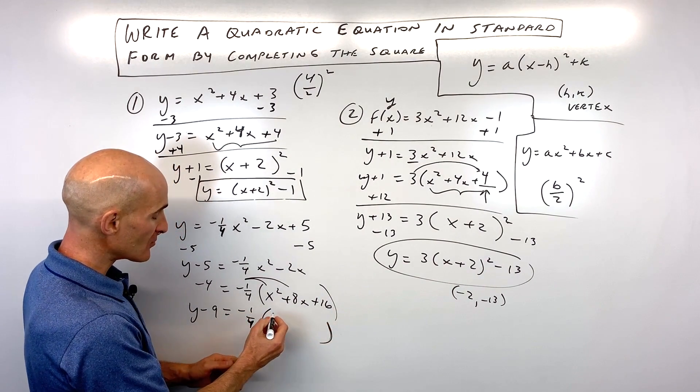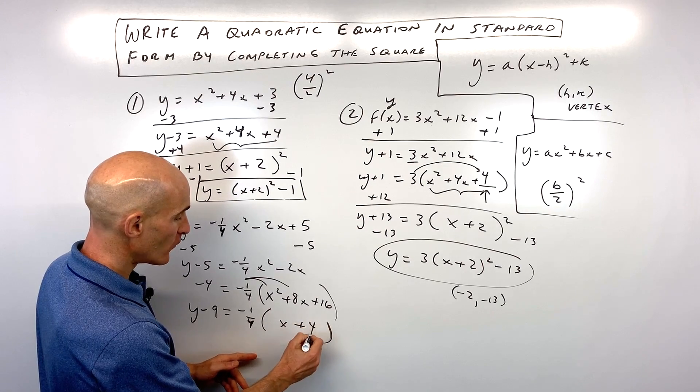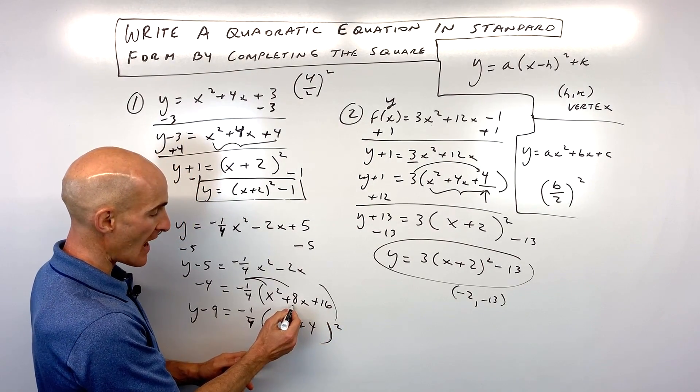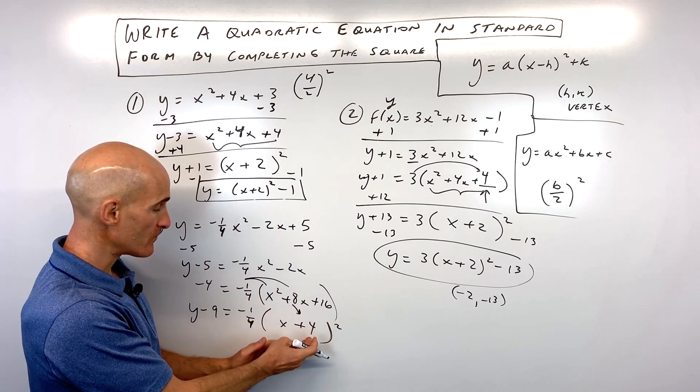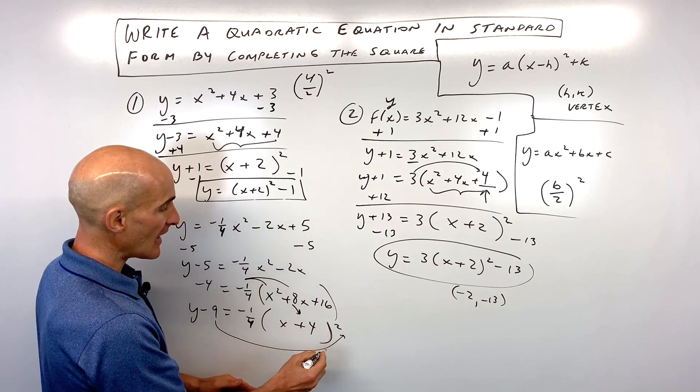And now I'm just going to factor this as it's going to be x plus 4, the quantity squared. Remember it's half of this b value. If it was minus 8x, I would write minus 4. And then the last step is just to add the 9 to the other side.